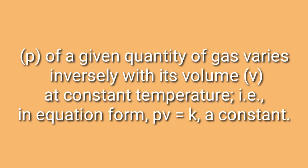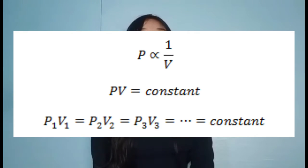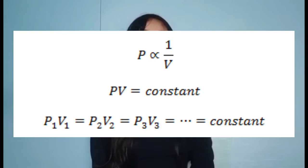The formula of Boyle's Law comes from empirical relations formulated by the physicist Robert Boyle in 1660. It states that the pressure P of a given quantity of gas varies inversely with its volume V at constant temperature. In equation form, PV equals a constant.